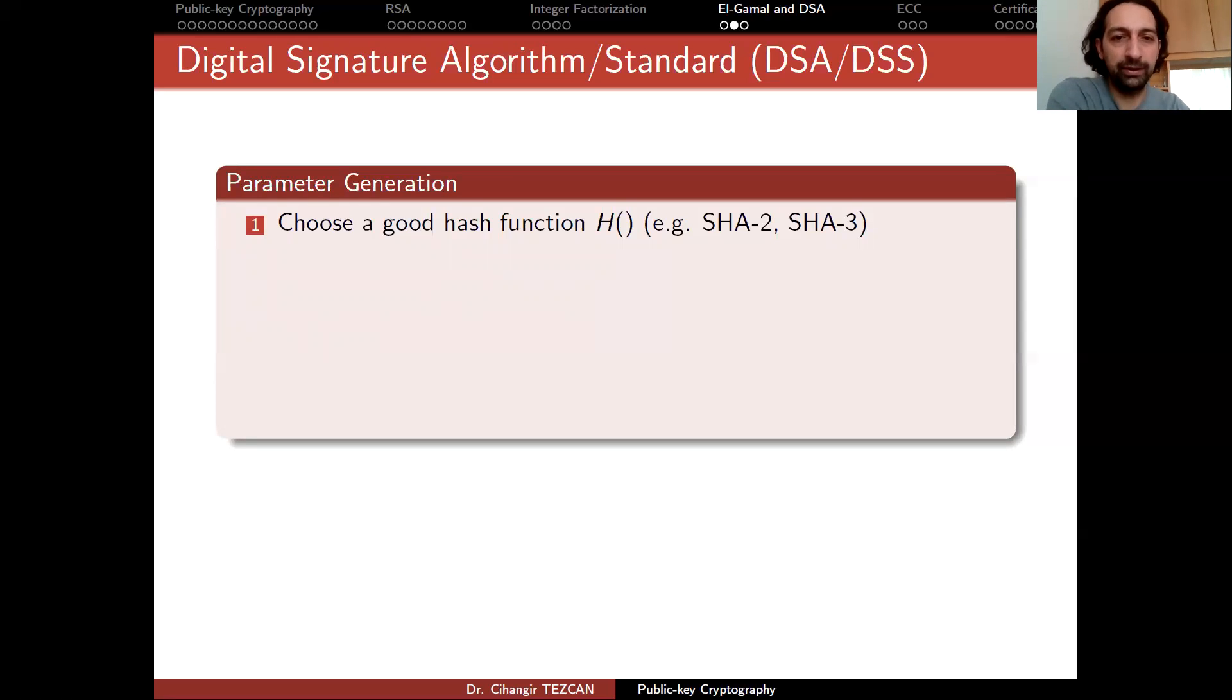So let's see how the digital signature algorithm works. And actually this solves the authentication problem because you can digitally sign and prove yourself with any message. So it starts like this. Initially, you have to choose some parameters. You choose a good hash function, H.